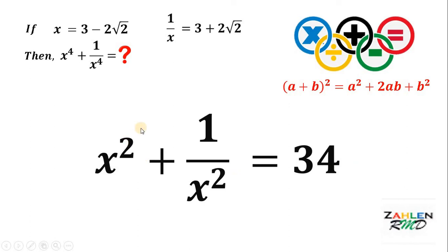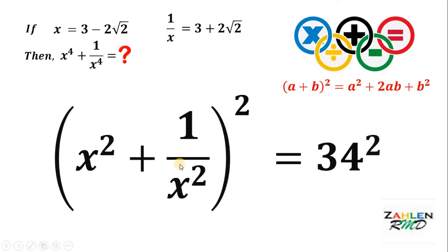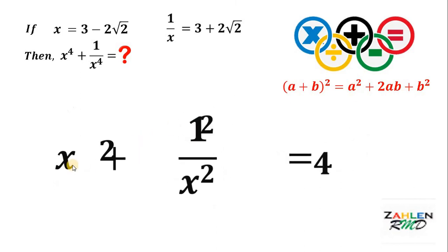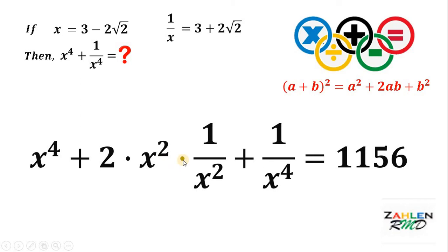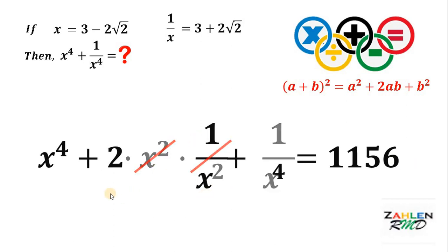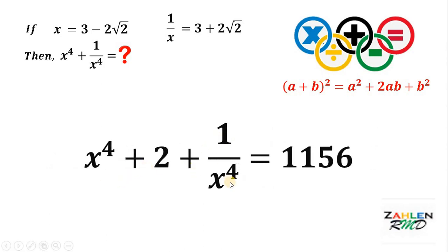Now we are close to our goal of x to the fourth plus 1 over x to the fourth. To achieve that, we square both sides again. So, we have x squared plus 1 over x squared, raised to the 2nd power, equals 34 squared. Applying the same identity to the left-hand side, we get x to the fourth plus 2 times x squared times 1 over x squared plus 1 over x to the fourth, which equals 34 squared, or 1,156. Since x squared times 1 over x squared is just 1, we have x to the fourth plus 2 plus 1 over x to the fourth equals 1,156.